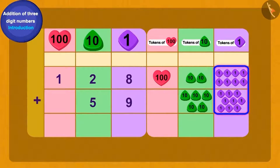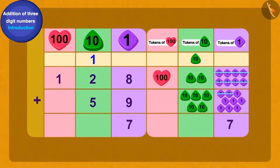Now, how do we write this? We can add 10 ones tokens and get 1 token of tens. How many ones tokens left? We have 7 ones tokens left.